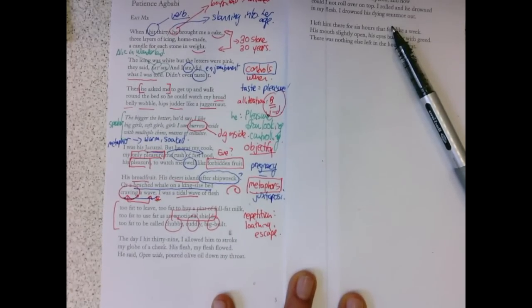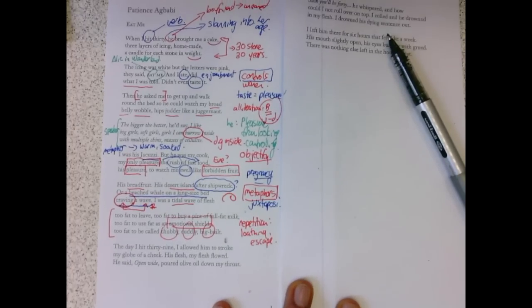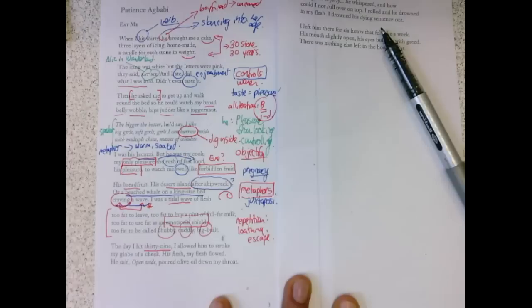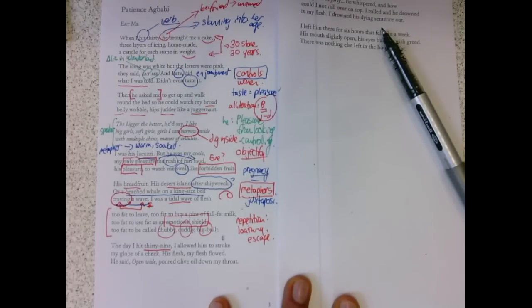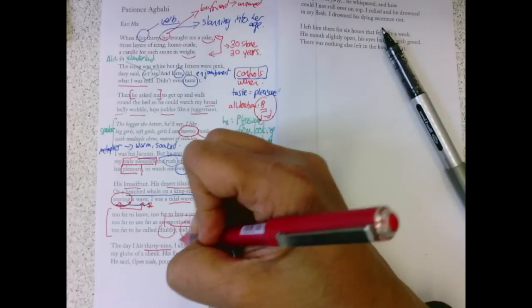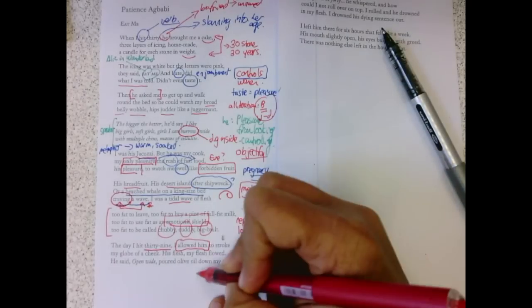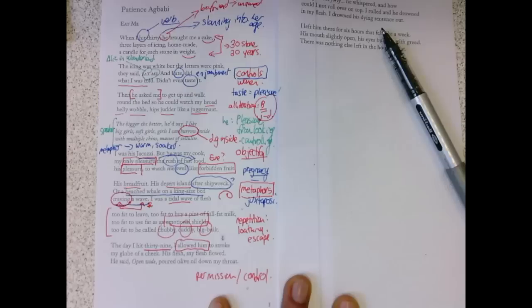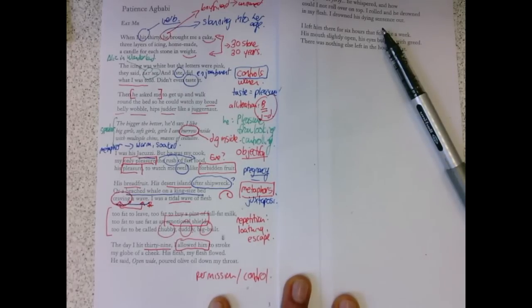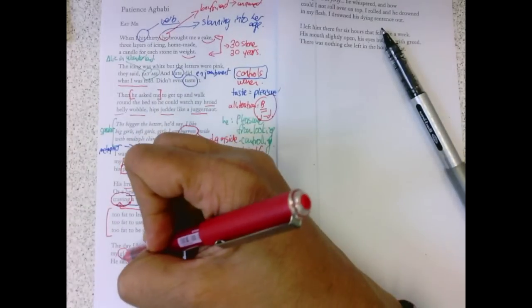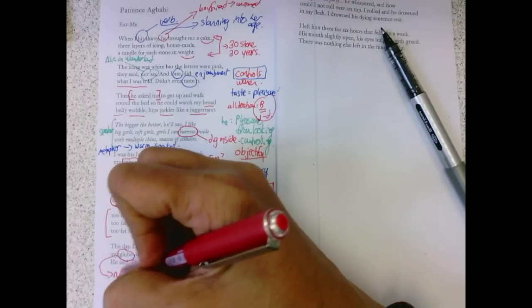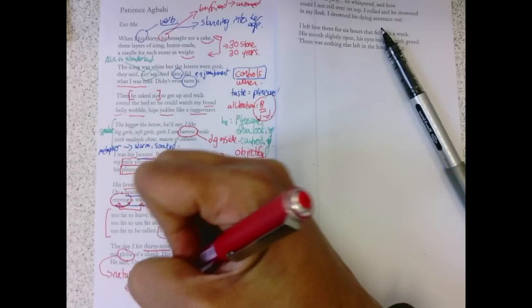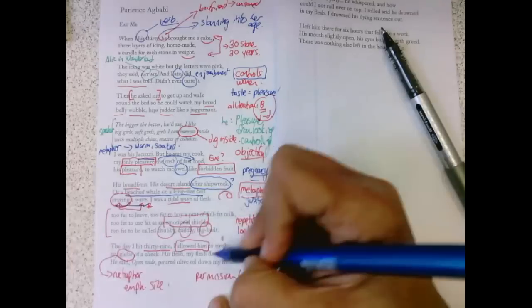And this happened for, I mean, this is an enormously odd poem for me. Because then it's nine years. The day I hit 39, I allowed him permission. And control work throughout this poem in interesting ways, I think. I allowed him to stroke my globe of a cheek. Again, these metaphors emphasize size. His flesh, my flesh, flowed.